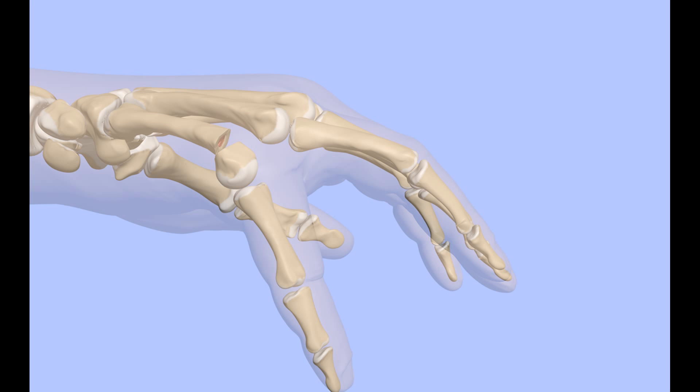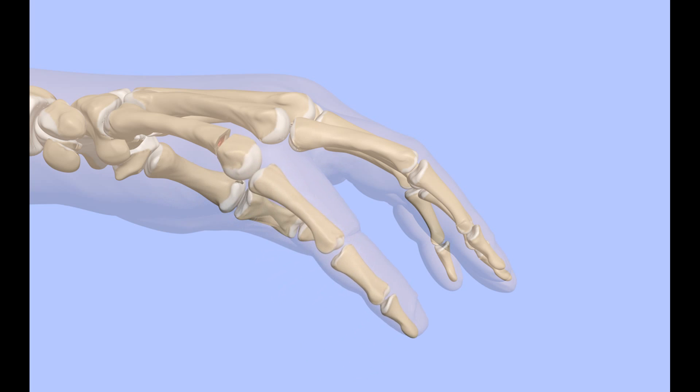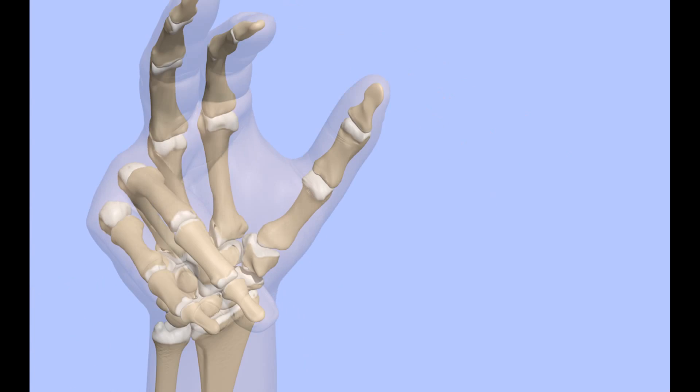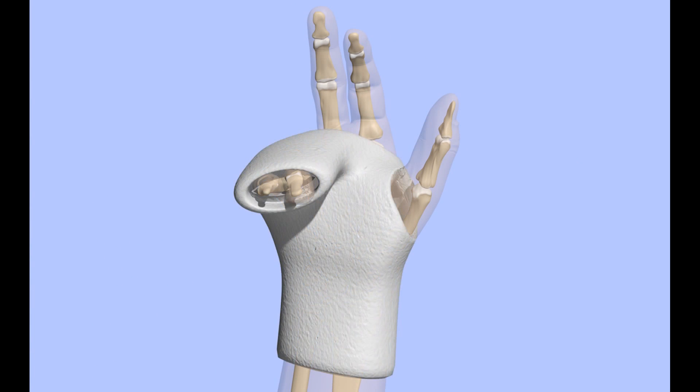The proximal phalanx of the small finger can be used to push the distal fragment of the broken metacarpal back into place. A cast is then applied with the fingers in this position to hold the fragment in alignment.